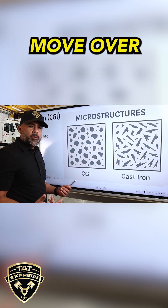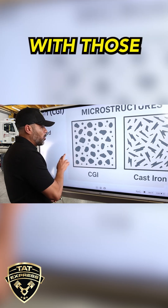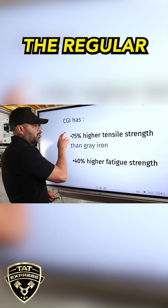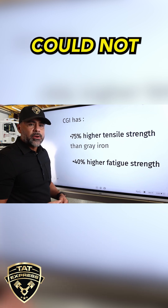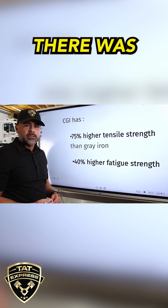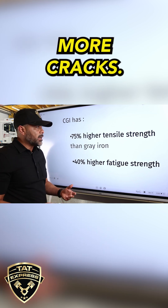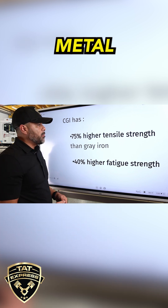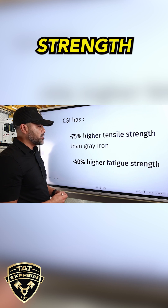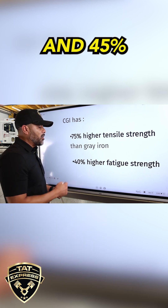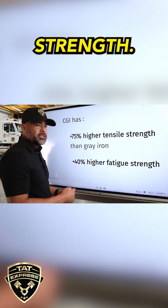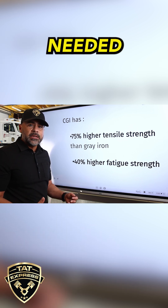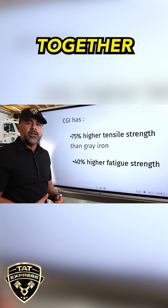Why did they move over to this type of metal? With the different changes in cylinder pressure and temperature, regular gray iron could not handle the stress — there were more failures and more cracks. So they moved over to this higher-strength metal, which has 75% higher tensile strength than gray iron and 40% higher fatigue strength. That is a big step up, and it's what manufacturers needed to keep these engines together and from failing.